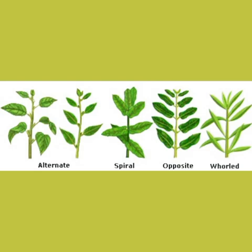In opposite arrangement, a pair of leaves arises from the same node, but the leaves grow opposite to each other in two different directions. Examples include calotropis and basil.